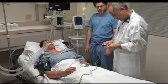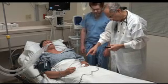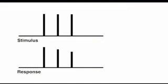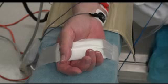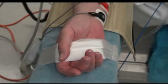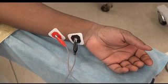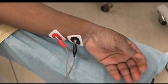Subjective evaluation of neuromuscular function may consist of feeling or seeing the response after stimulation. However, subjective assessments are not accurate. When the train of four ratio recovers to a value of 0.4 or higher, detection of train of four fade is not reliable. Subjective detection of fade during double burst stimulation or 100 Hz tetanic stimulation may approach the threshold of adequate recovery, but such evaluations are painful and should not be performed in conscious patients.